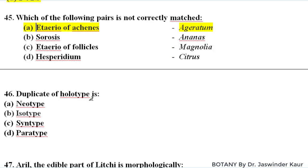A duplicate specimen of the holotype is known as isotype.